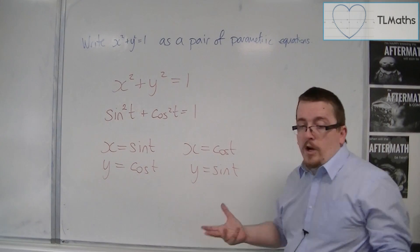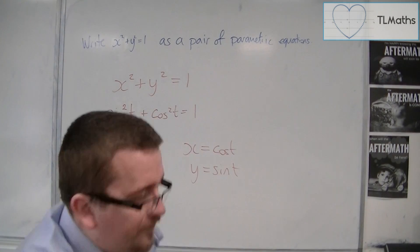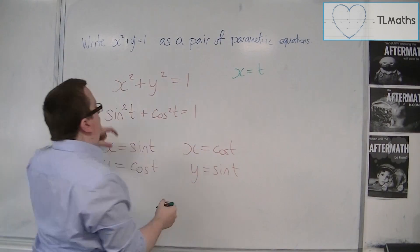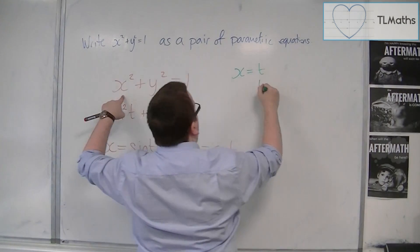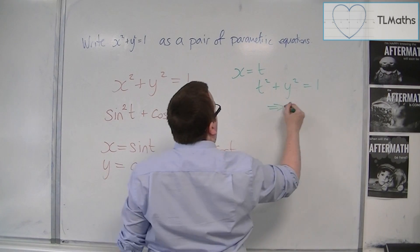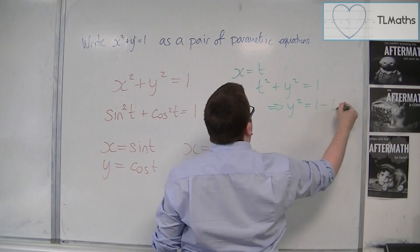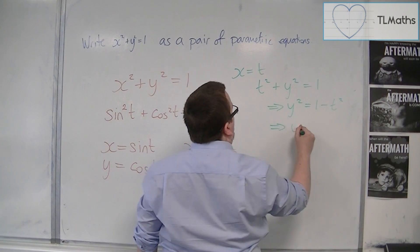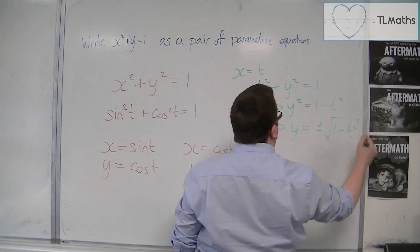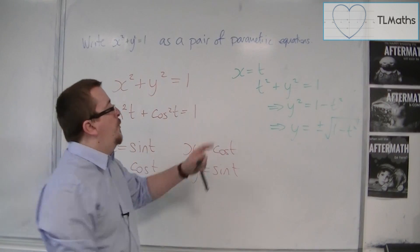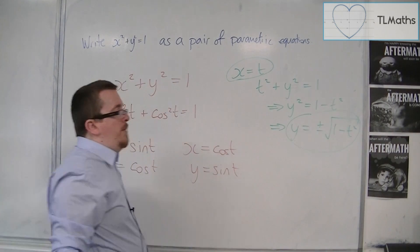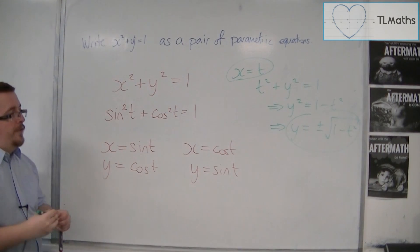So the way that I would probably avoid doing this is writing things like, let x be equal to t. And then we can say that t squared plus y squared equals 1. So y squared must be 1 minus t squared. And then y must be plus or minus the square root of 1 minus t squared. I would avoid using those as the parametric equations for the circle.